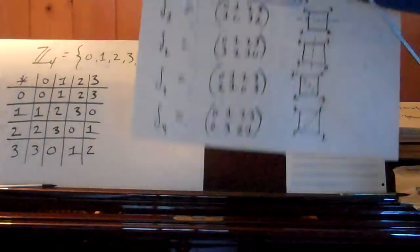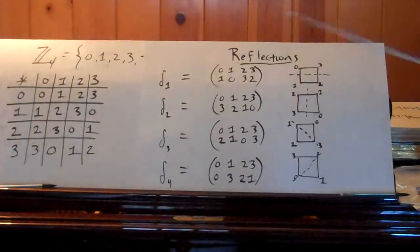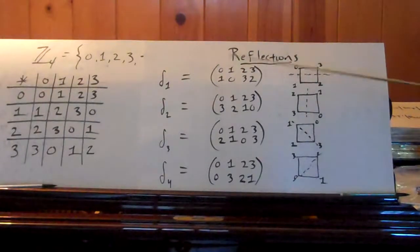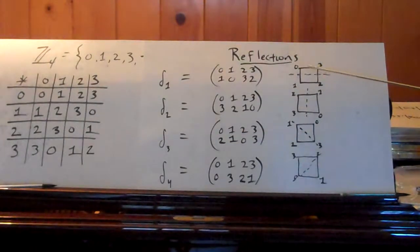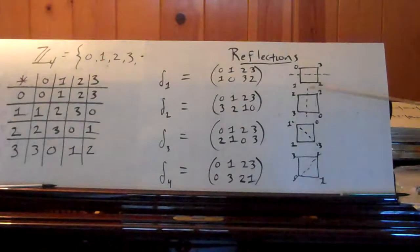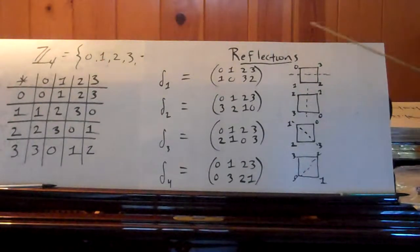And then on the back we finally see our four reflections, delta 1 through 4: the horizontal, vertical, and then the two diagonal reflections.